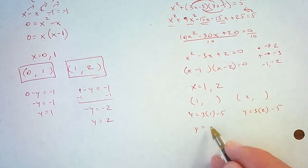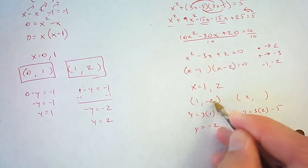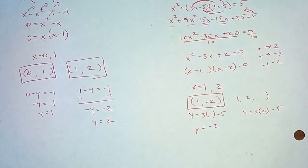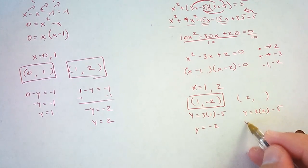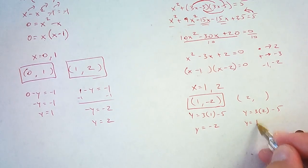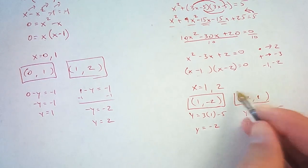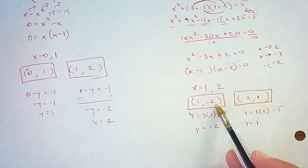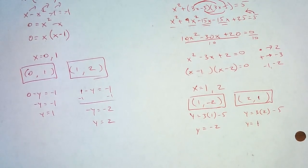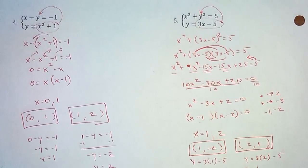3 times 1 is 3 minus 5 is negative 2. So there's one solution, (1, negative 2). And 3 times 2 is 6, minus 5 is 1. So 1 is the other value of y. So I've got a solution at (2, 1). So (1, negative 2) and (2, 1) are the two points of intersection of this circle and this line. So those are my two solutions.